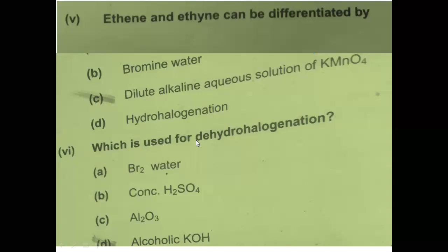MCQ number 6: which reagent is used for dehydrohalogenation? Dehydrohalogenation means elimination of hydrogen from one carbon atom and halogen from the second carbon atom, and then the two carbon atoms form a double bond. This process takes place in the presence of alcoholic potassium hydroxide. The halogen eliminates with potassium to give potassium chloride, and hydrogen with the hydroxyl group forms water.